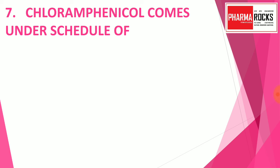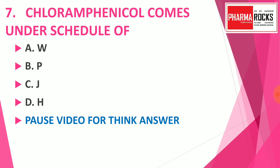Question number 7: Chloramphenicol comes under the schedule of — option A: schedule W, option B: schedule P, option C: schedule J, option D: schedule H. Pause the video to think about the answer. The correct answer is schedule H.